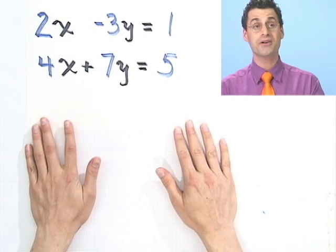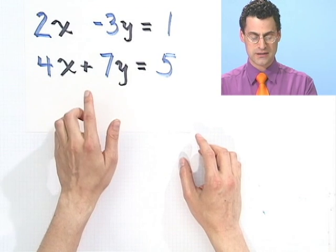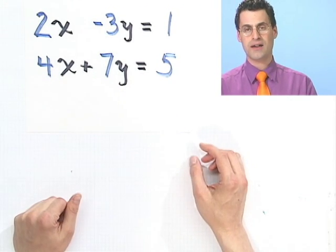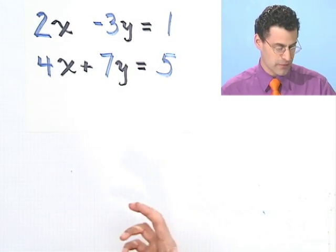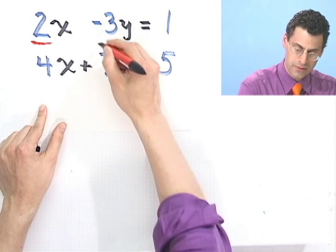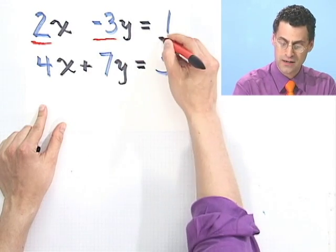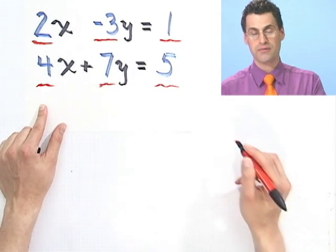And if you think about it, when you look at some sort of system, say this one, which I prepared in advance: 2x minus 3y equals 1, 4x plus 7y equals 5. Really, if you think about it, the real key players here, the real important people, are the coefficients. The 2, the minus 3, the 1, the 4, the 7, and the 5.